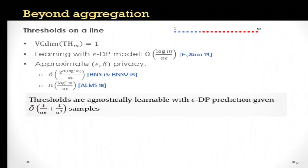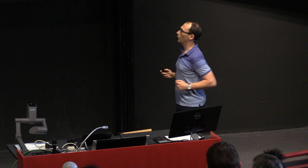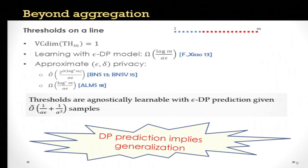This involves a new algorithm whose analysis is quite nice. We use a class with infinite VC dimension, so we cannot directly use uniform convergence. Instead, we analyze the empirical error of this algorithm and then use the generalization property of this prediction to derive generalization bounds. As a bonus, we prove that the definition we introduced also implies generalization, with guarantees somewhat different from the standard ones we know.